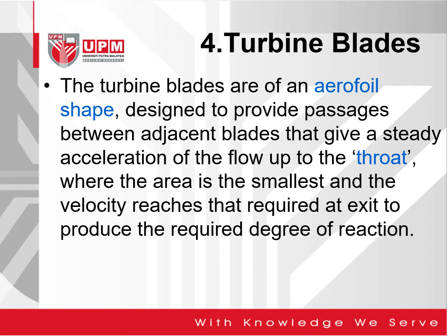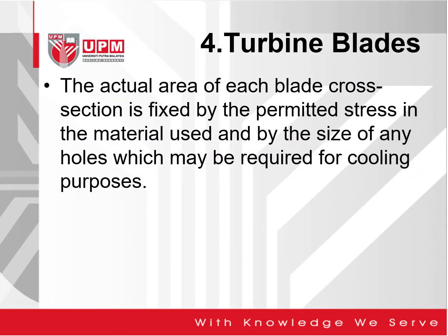The turbine blades are of an aerofoil shape designed to provide passages between adjacent blades that give a steady acceleration of the flow up to the throat, where the area is the smallest and the velocity reaches that required at exit to produce the required degree of reaction. The actual area of each blade cross-section is fixed by permitted stress in the material used and by the size of any holes which may be required for cooling purposes. Some of the turbine blades are designed with cooling holes coming through the construction of the blades.